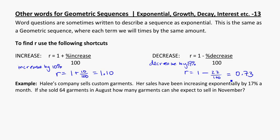These can come up as problems both for just finding like the 20th term, but also for things like finding sums. So you have to read the problem really carefully. I'll go through a few examples. I might break this up into two videos, we'll see how it goes. Haley's company sells custom garments. Her sales have been increasing exponentially. That gives me a big hint that it's going to be a geometric sequence. It is increasing and they've given me the percentage there.